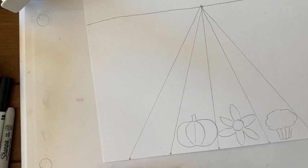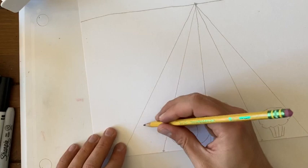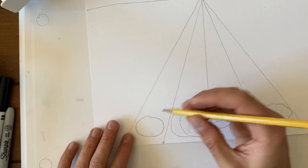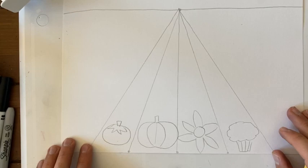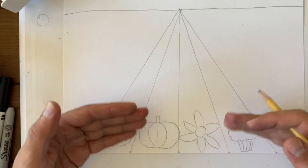And my last row, hmm, what do I want for my last row? I think this is going to be a row of tomatoes. So, for my tomato, it almost looks like a pumpkin. I'm going to make a nice big circle like this. Oh, that's a big tomato. And they've got a nice top to it like that.